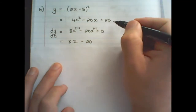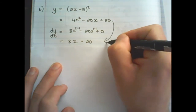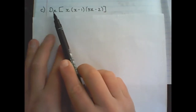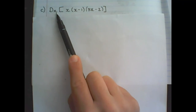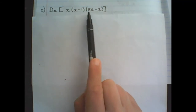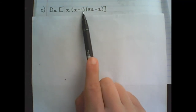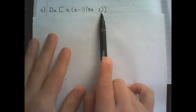With some practice you will be able to do this step directly. Now we want to find the derivative of x in the following expression: x times (x minus 1) times (3x minus 2).